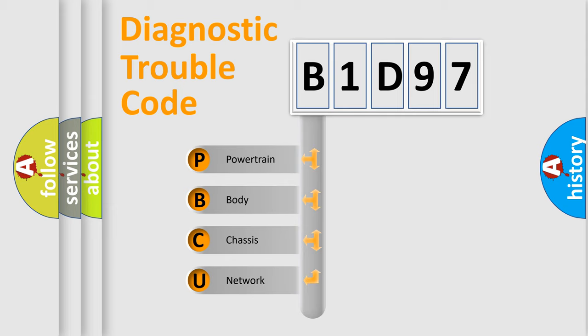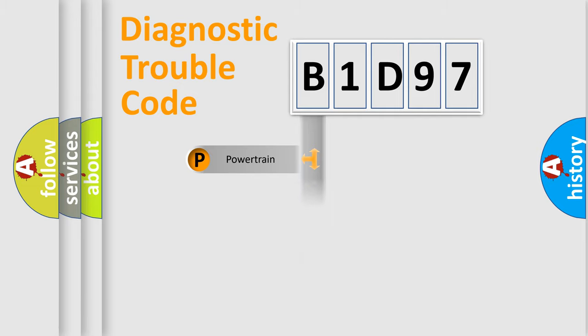We divide the electric system of automobiles into four basic units: Powertrain, Body, Chassis, and Network. This distribution is defined in the first character code.